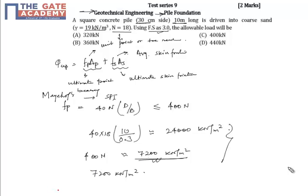Now F_S, that is unit frictional resistance, is equal to 2 into N, that is SPT value, 2 into 18, it comes out to be 36 kN per meter square.